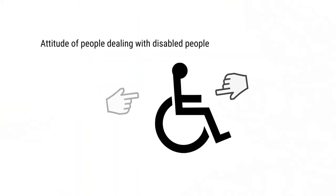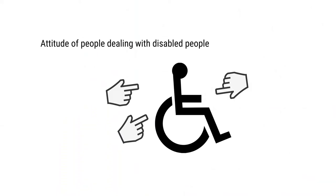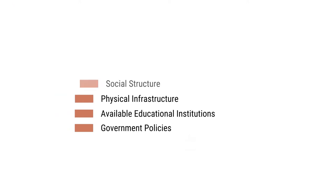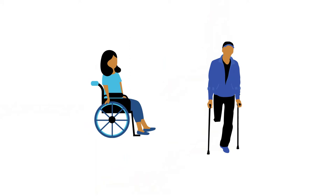People with disabilities continue with multiple disadvantages for various reasons. The main reasons are the attitude of people dealing with people with disabilities, the social structure, the physical infrastructure available in educational institutions, and government policies towards people with disabilities, which are not very encouraging. Our society is constructed by people with capabilities, for people with capabilities, and it is this that makes people with impairments incapable of functioning.